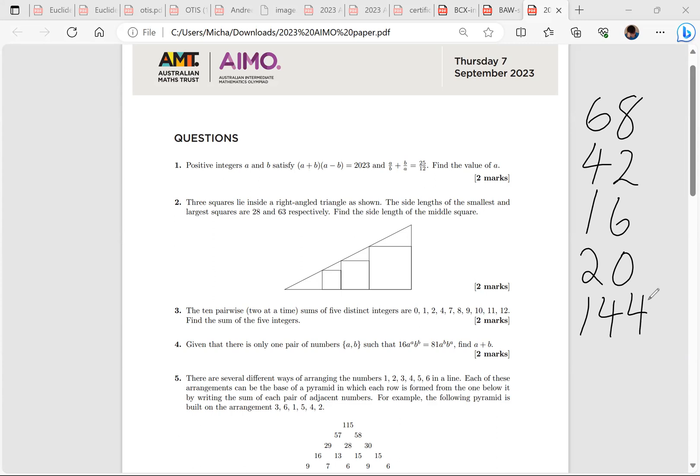Okay: 68, 42, 16, 20, 144, 84, 89, 73, 625. Now those are the first eight questions. Yeah, 72 and one.